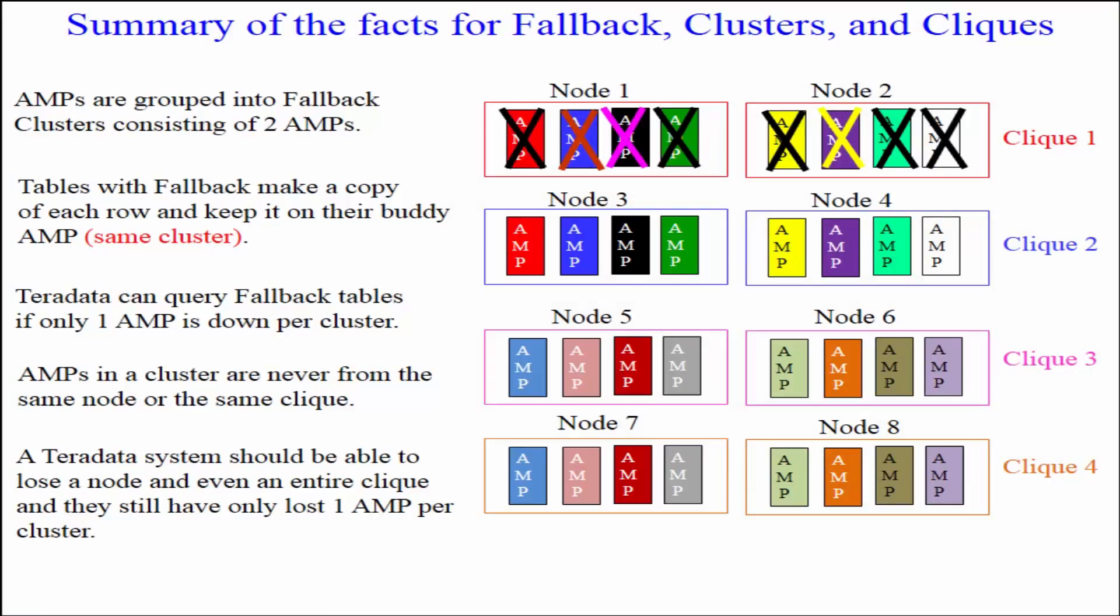Summary of the facts for fallback clusters and cliques. AMPs are grouped into fallback clusters consisting of two AMPs. Tables with fallback make a copy of each row and keep it on their buddy AMP within the same cluster. Teradata can query fallback tables if only one AMP is down per cluster. AMPs in a cluster are never from the same node or the same clique. A Teradata system should be able to lose a node and even an entire clique and still have only lost one AMP per cluster.